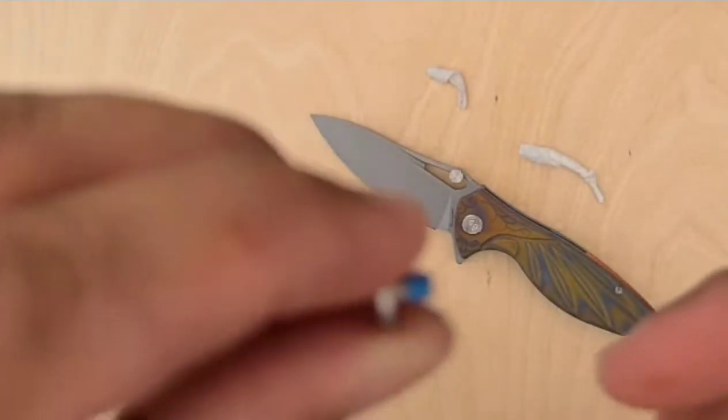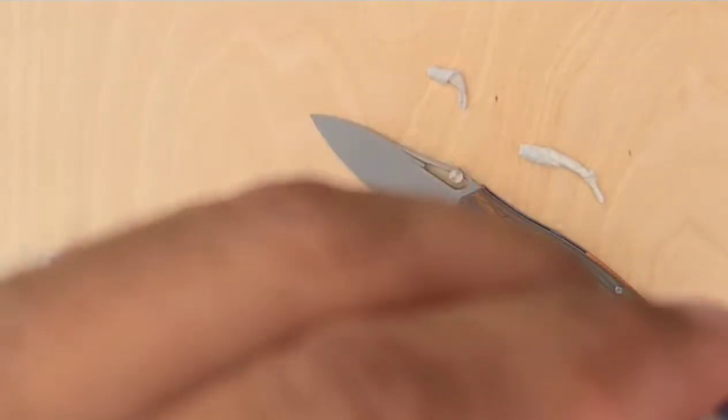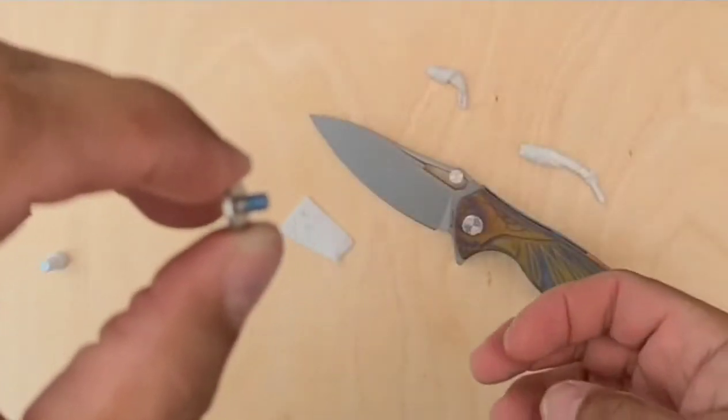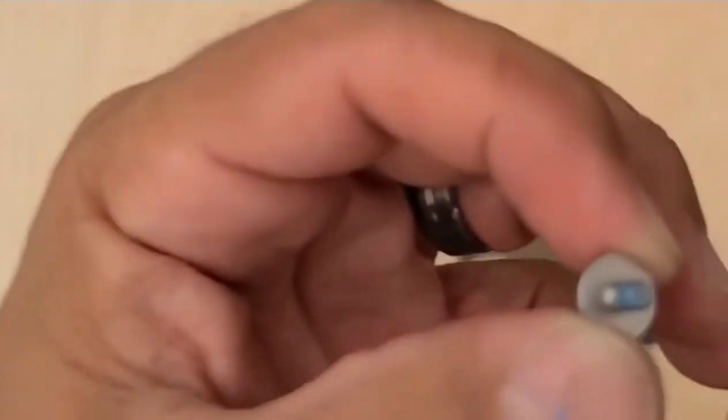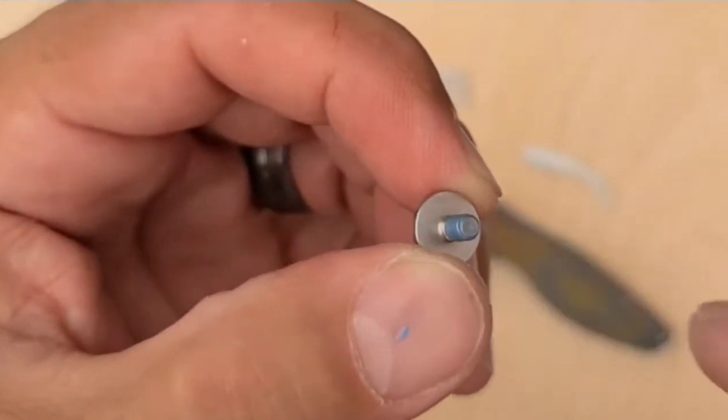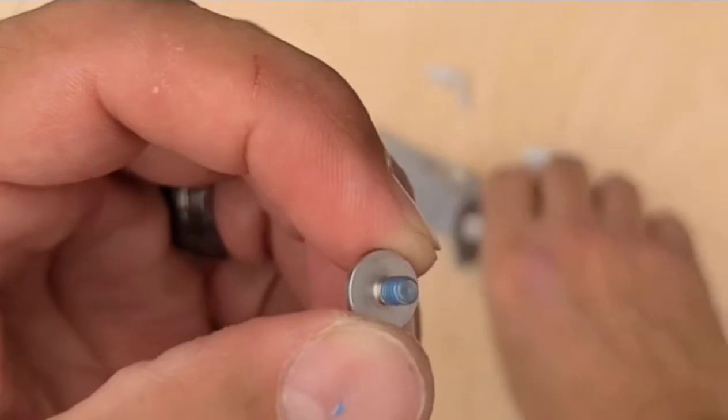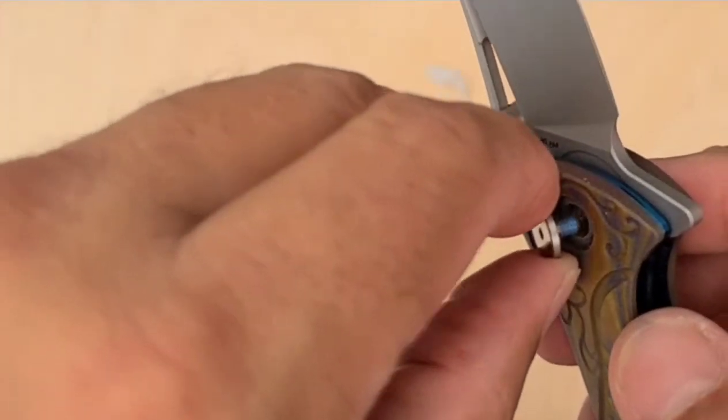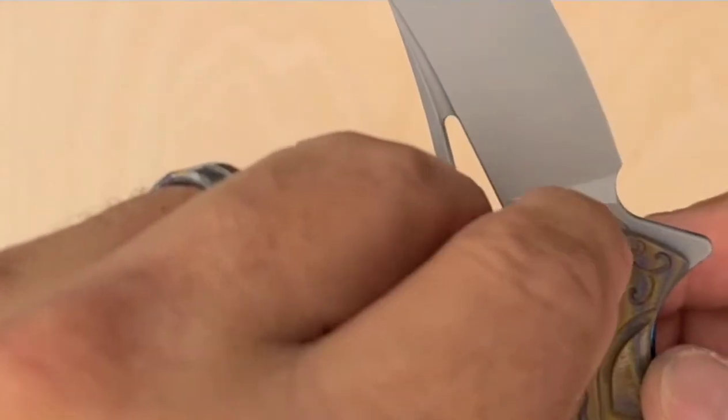I think I'm actually going to kind of touch that and kind of smear it into the threads and make sure it's smeared in there good. All right. And then I'll just clean my finger off here. Make sure it's not all over the surface of the pivot. We don't want it to smear all over your scales. All right. So then we put it back in.